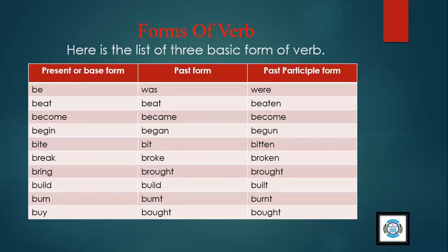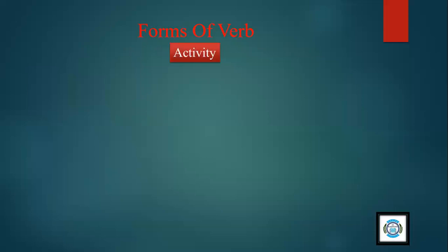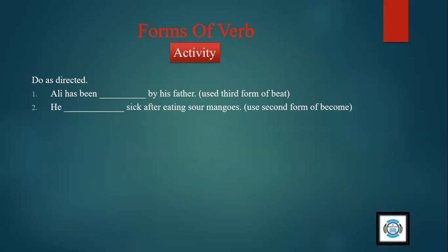So here comes the activity: Do as directed. Ali has been blank by his father - use third form of beat. What is the third form of beat? 'Beaten'. Ali has been beaten by his father. He blank sick after eating sour mangoes - use second form of become. What is the second form? 'Became'.